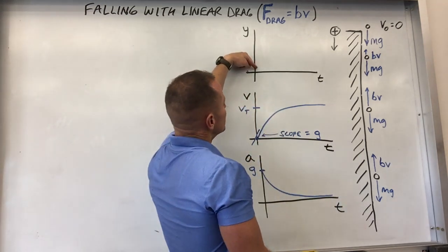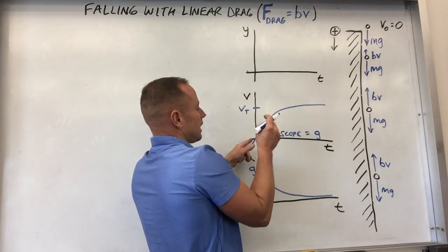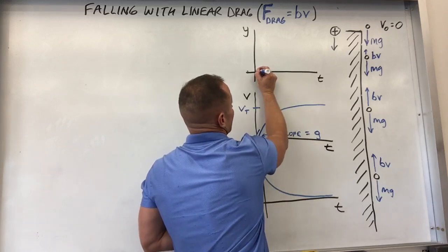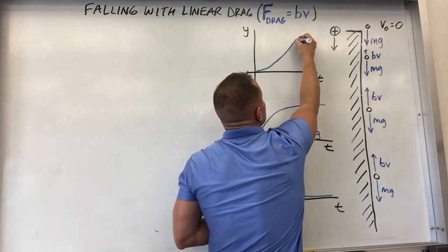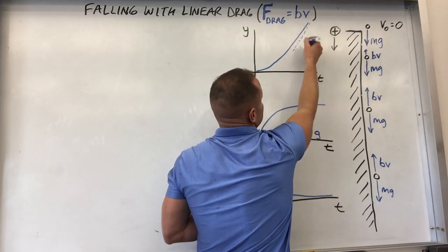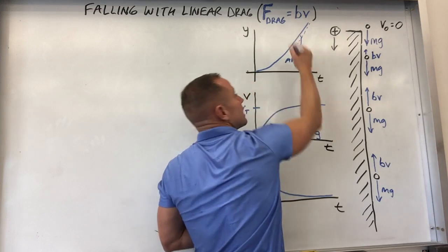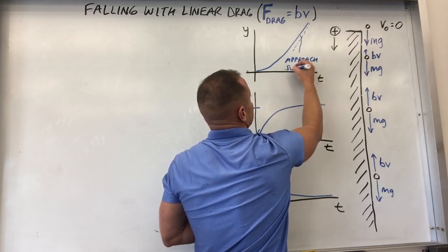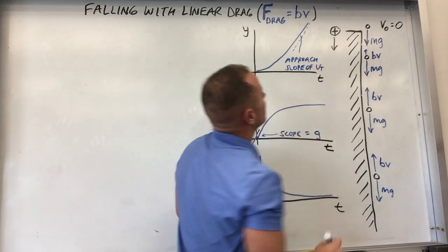And then likewise on position versus time, well, it starts off falling like a drop projectile with no drag. So the position starts kind of growing quadratically, but then instead of growing quadratically forever, what it's going to do is approach a slope. It's going to approach a slope of VT. So it doesn't keep continuously getting steeper and steeper, but we're going to approach slope of VT here, of V terminal.